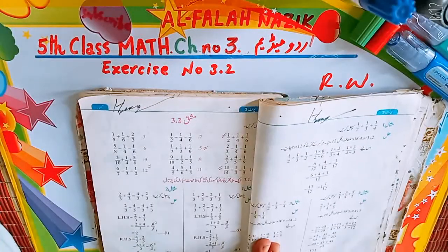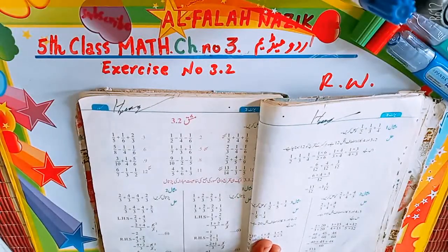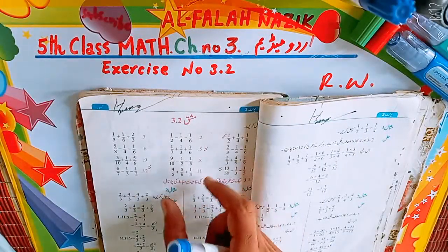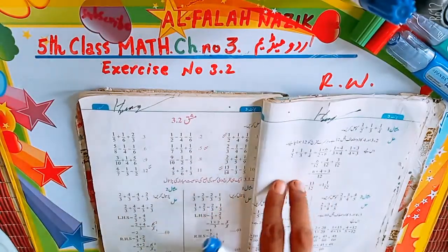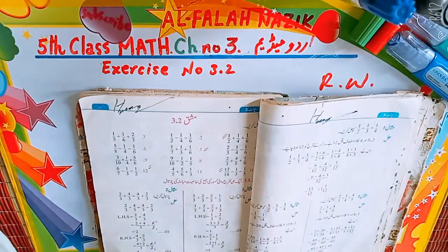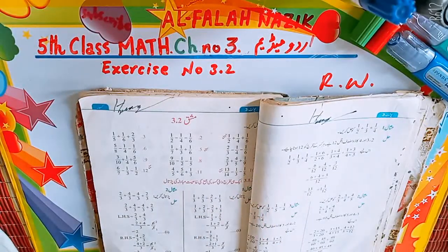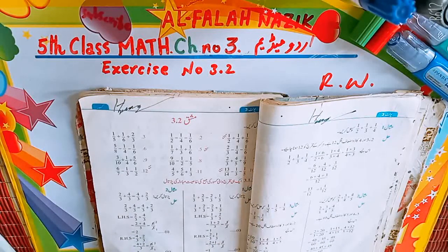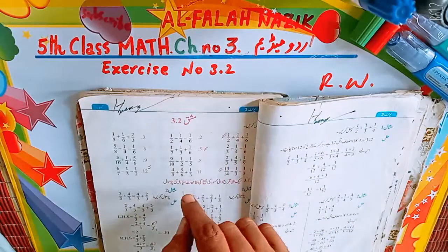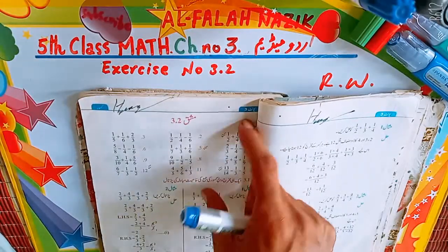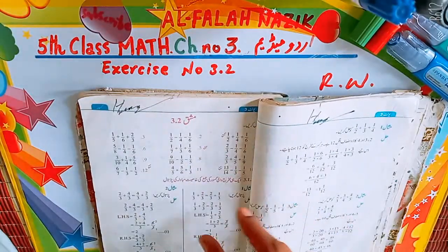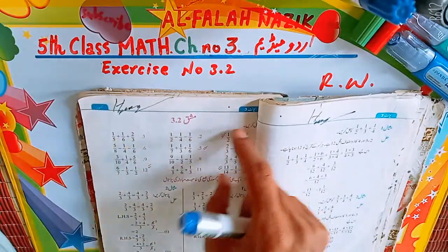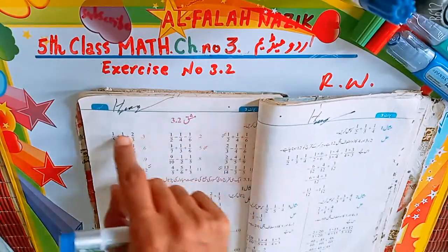Assalamualaikum dear students. Exercise number 3.1 میں question number 1 سے لے کر question number 12 تک جمع اور minus کے mix سوال ہیں — کچھ جمع کے ہیں، کچھ minus کے ہیں، اور کچھ جمع minus کے mix سوال ہیں۔ پہلے exercise 3.1 میں دو دو fractions دی ہوئی تھی، لیکن اس exercise میں تین تین fractions دی ہوئی ہیں۔